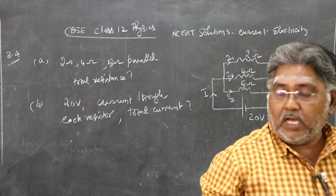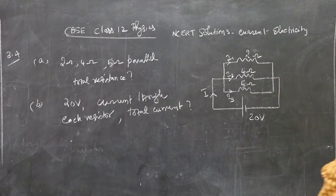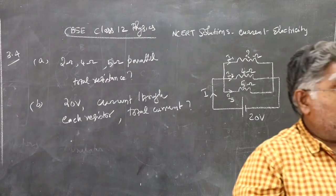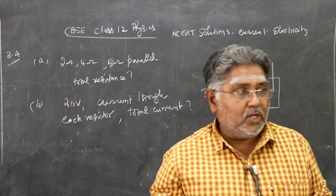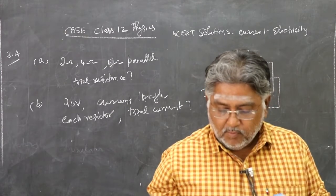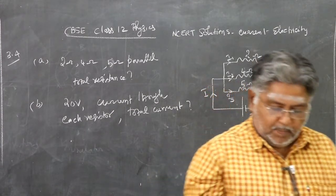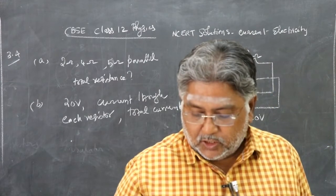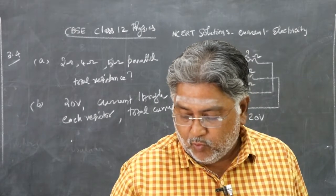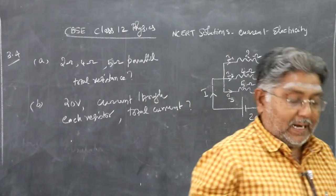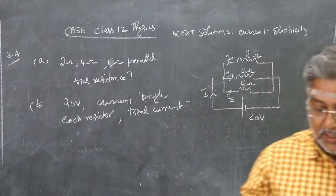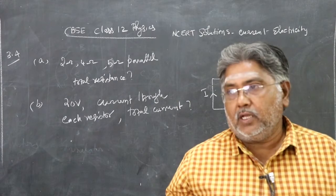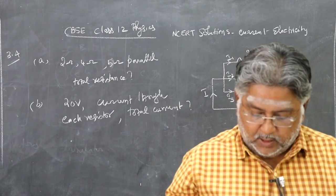CBSE Physics Class 12 NCERT solutions on current electricity, chapter exercise 3.4. The question has two subdivisions. Subdivision A: three resistors 2 ohm, 4 ohm, and 5 ohm are combined in parallel. What is the total resistance — meaning effective resistance — of the combination?